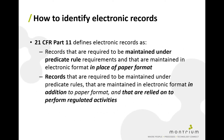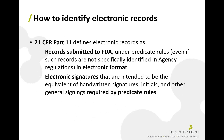We quite often scan documents and keep them centrally, and if we're making decisions based on the electronic copy, we have to maintain it as a record. The third type is anything submitted to FDA under predicate rules — typically all of our electronic submissions. Finally, electronic signatures intended to be the equivalent of handwritten signatures, initials, or other general signings required by predicate rules must also be maintained as records.